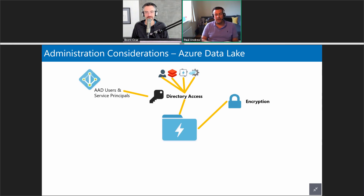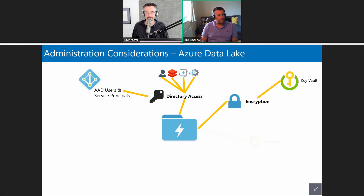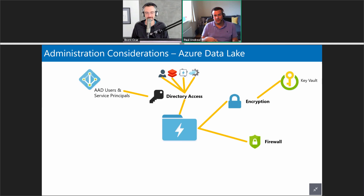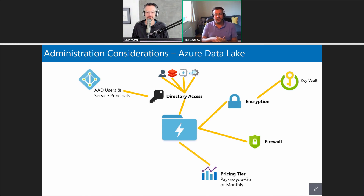Next: encryption. Data Lake Storage will be encrypted by default at rest, but maybe we want those encryption keys managed in Key Vault rather than letting Data Lake Store manage them. Our Data Lake Store also has its own firewall — turned off by default — so you may want to turn that on and whitelist external IPs. Pricing is also a big consideration: you can pre-buy storage at a monthly cost, which is much cheaper if you're putting lots of data in.